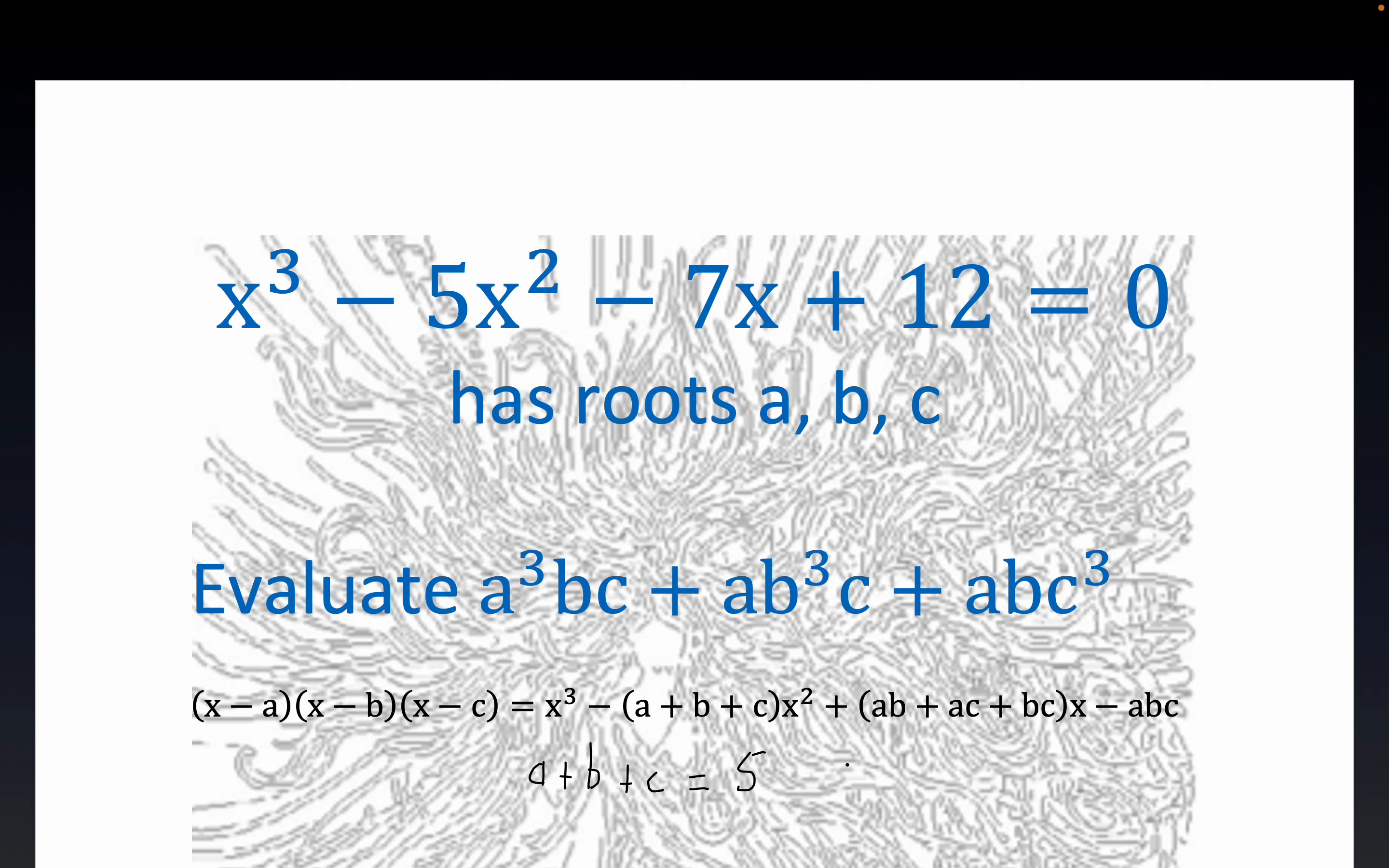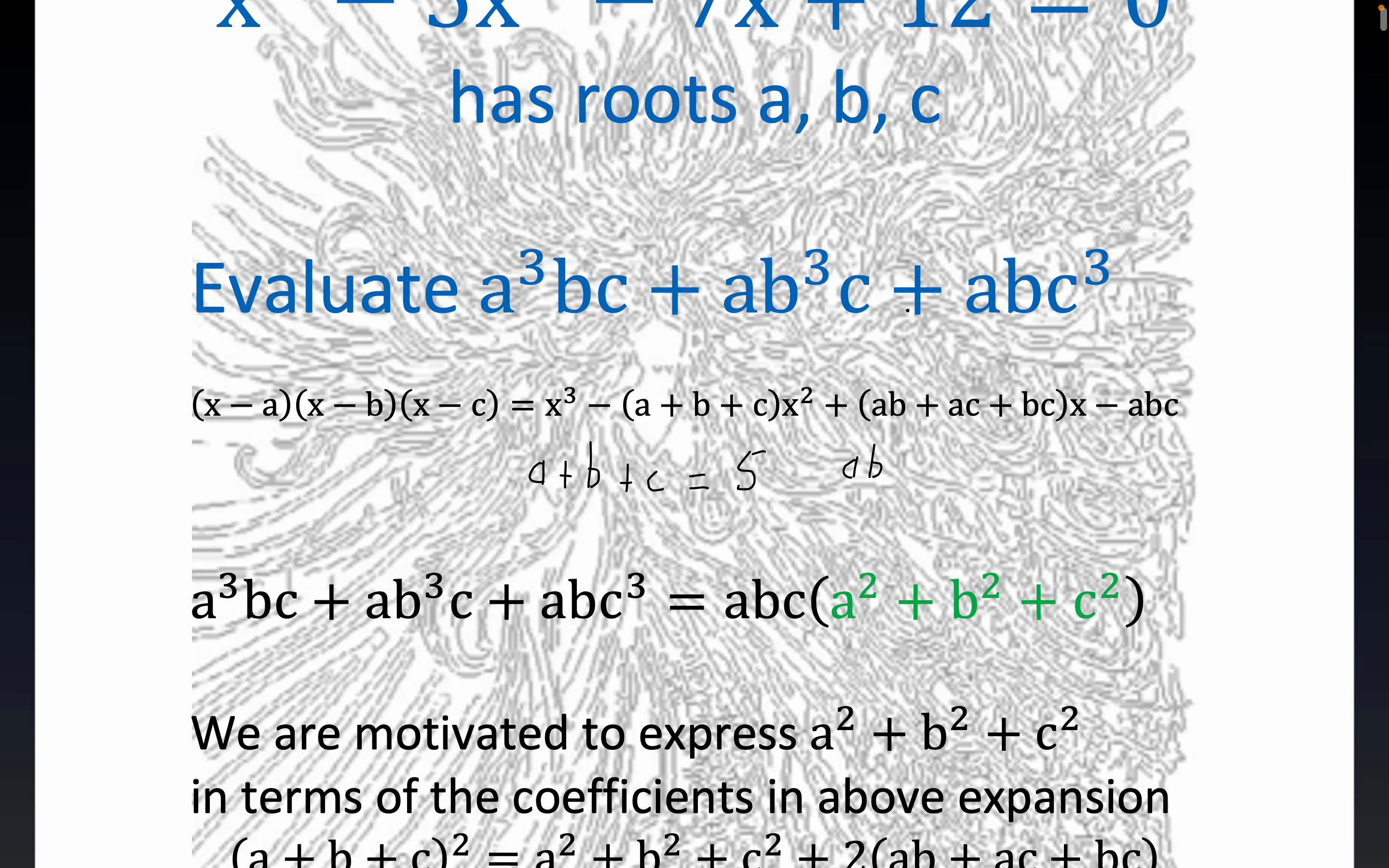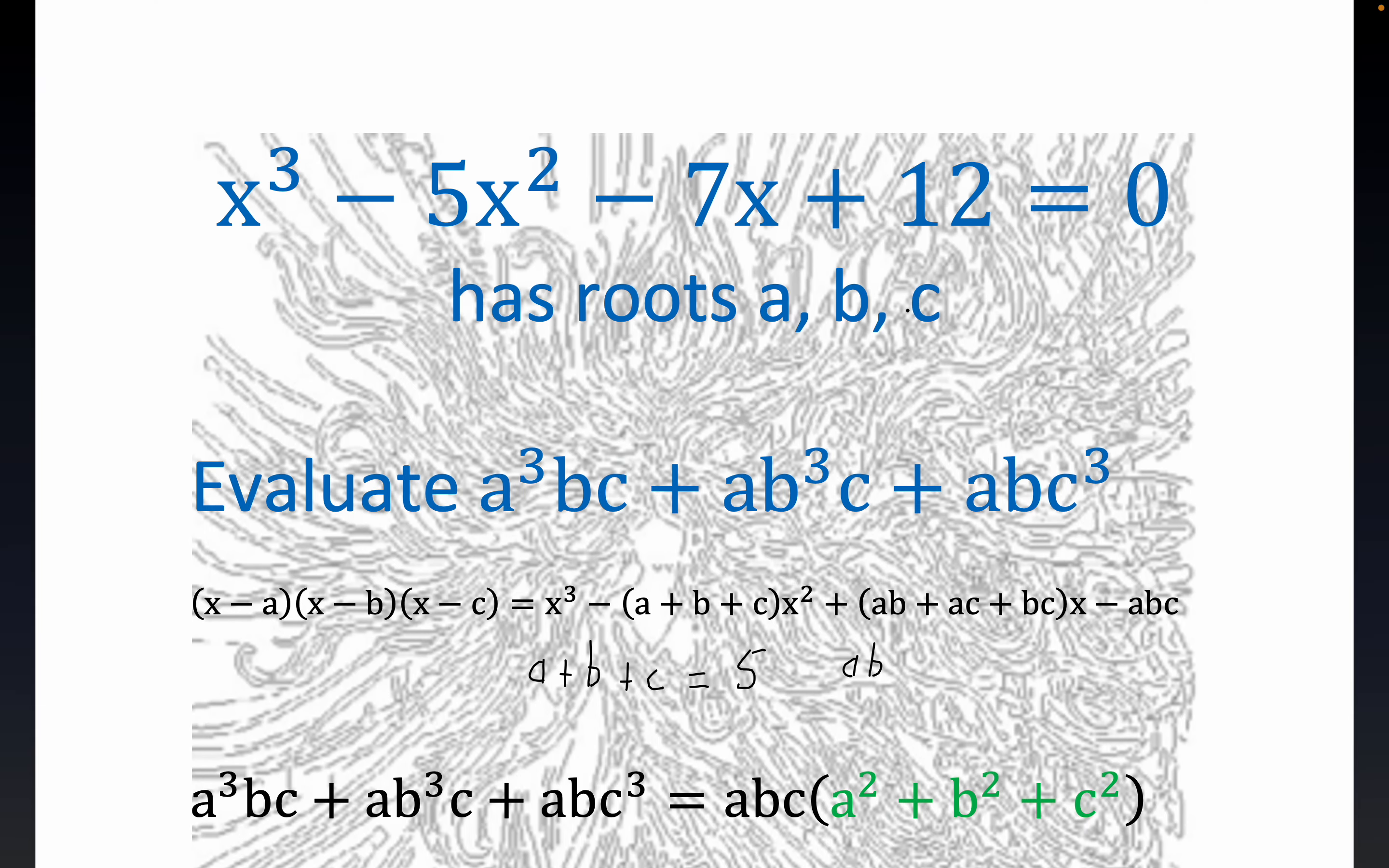By inspection, we can see that AB plus AC plus BC is directly equal to the coefficient of the X term, which is negative seven. Notice we hang on to the minus sign here. This is equal to minus seven.